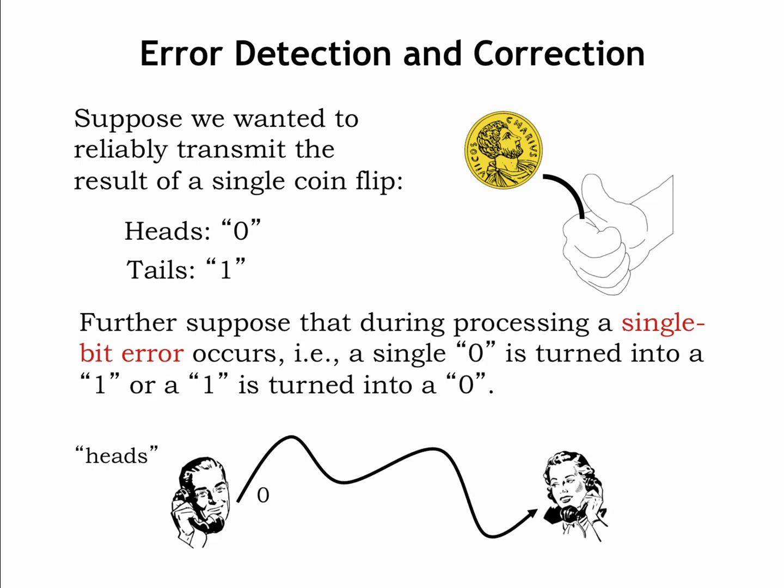Now, suppose some error occurs during processing, for example the data is corrupted while being transmitted from Bob to Alice. Bob intended to send the message heads, but the 0 was corrupted and became a 1 during transmission, so Alice receives 1 which he interprets as tails.